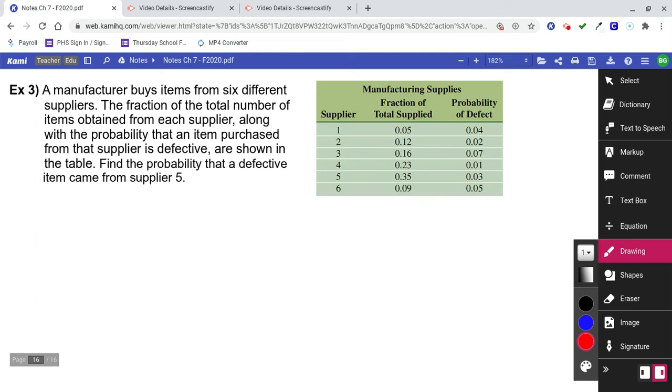Number three, a manufacturer buys items from six different suppliers. The fraction of the total number of items obtained from each supplier, along with the probability of an item purchased from that supplier being defective, are shown in the table. Find the probability that a defective item came from supplier five.